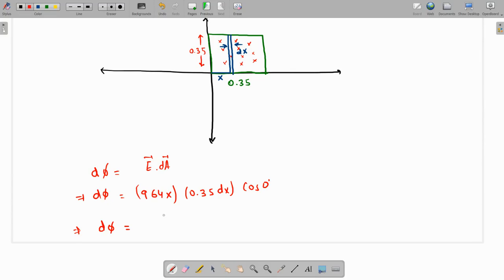We can do that. So let me grab my calculator over here. 964 times 0.35, this is 337.4. 337.4 X DX.